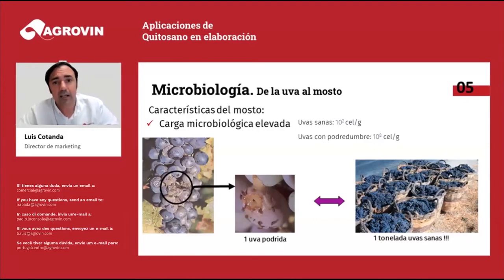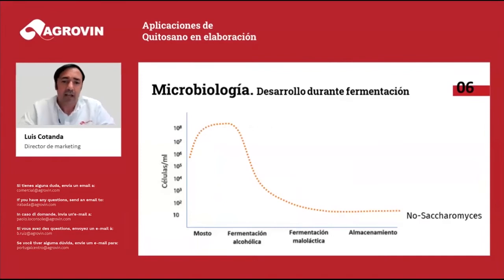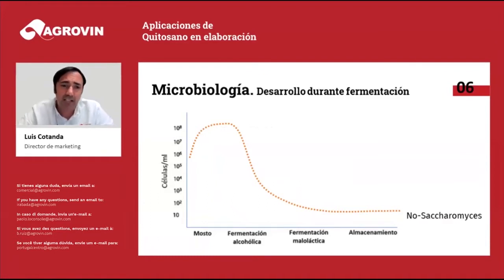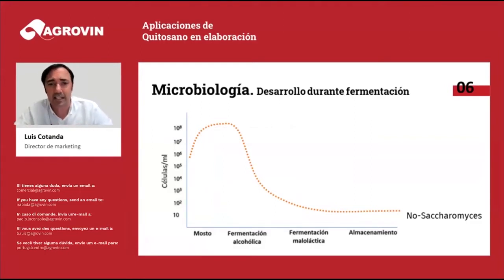The microbiological load of one contaminated grape is the same as the one held by a ton of healthy grapes. These microorganisms naturally present in the grape are going to develop during fermentation at a variable speed, depending on the pH, the sulfur dioxide, the temperature, and also depending on their initial population.